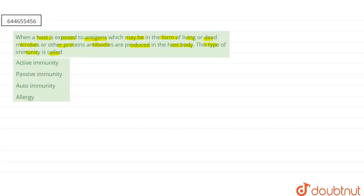If you are talking about our question, that is a host is exposed to the antigens which can be in living or dead form and antibodies production is occurring in the host body, then it is the example of active immunity.